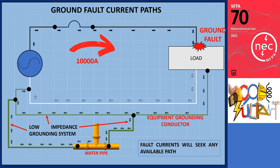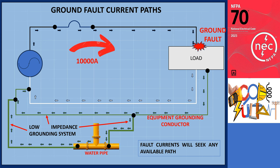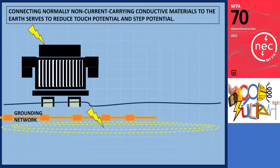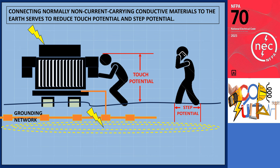It is a common misconception that current takes the path of least resistance and that grounding will prevent someone from experiencing electrical shock. In reality, to prevent electrical shocks, we need to focus on reducing touch potential or step potential by ensuring that all elements are at the same or equal potential.